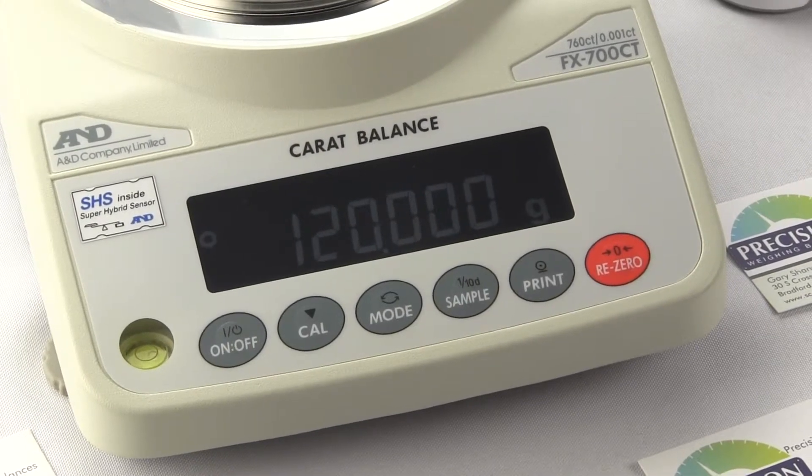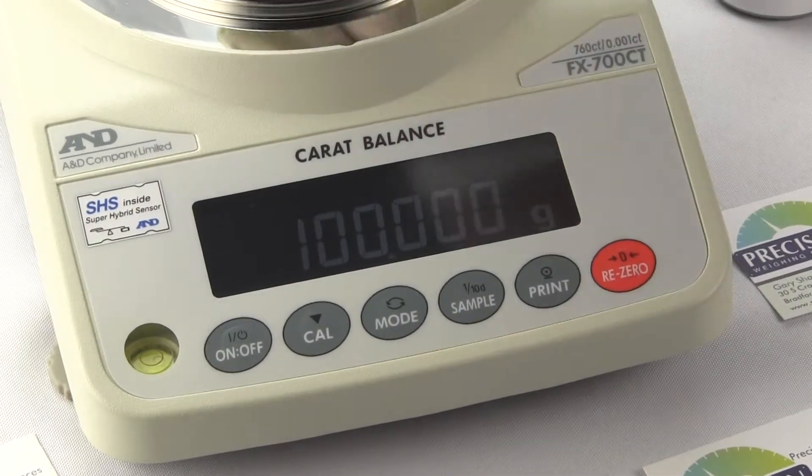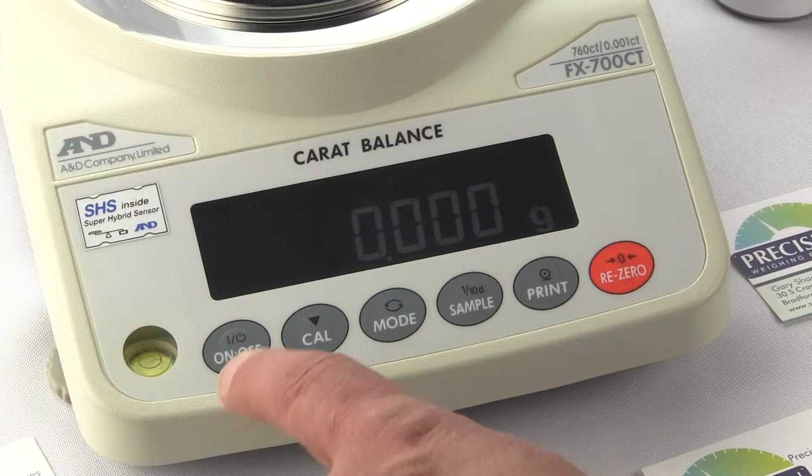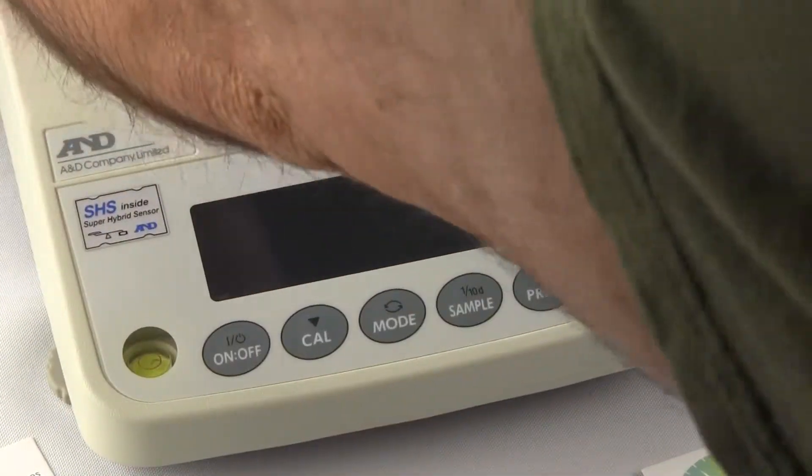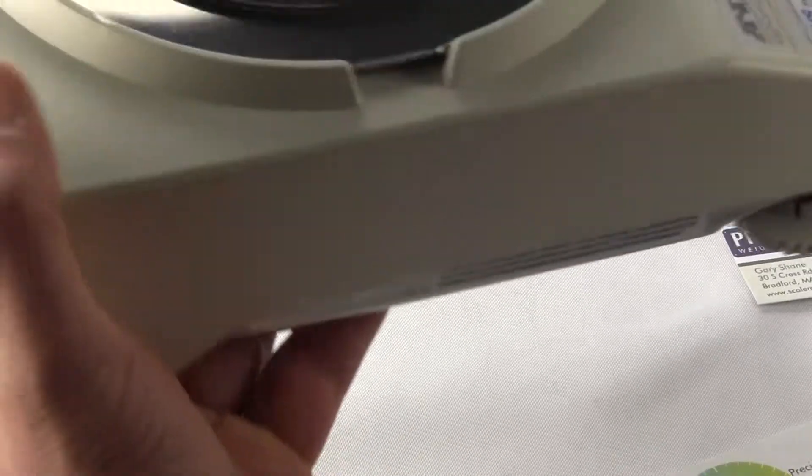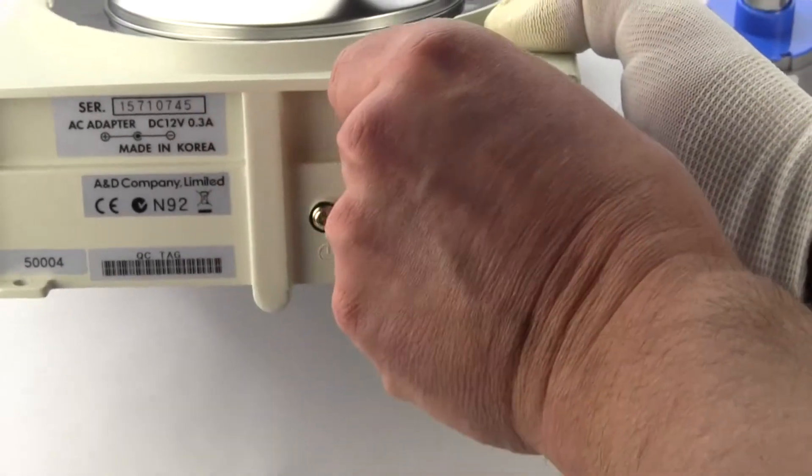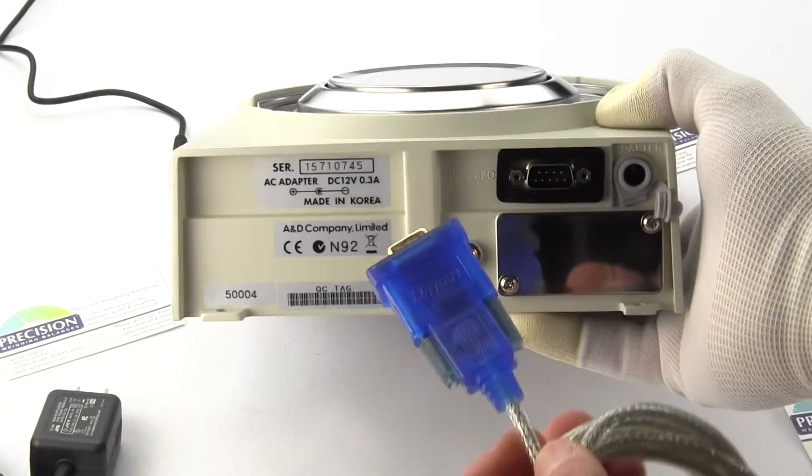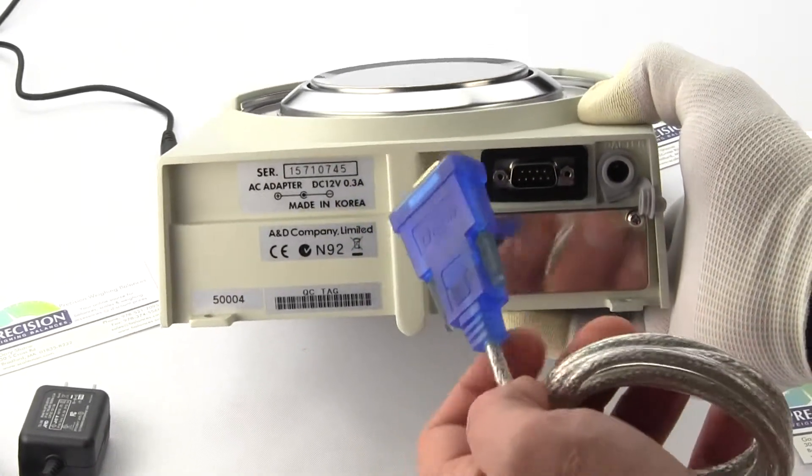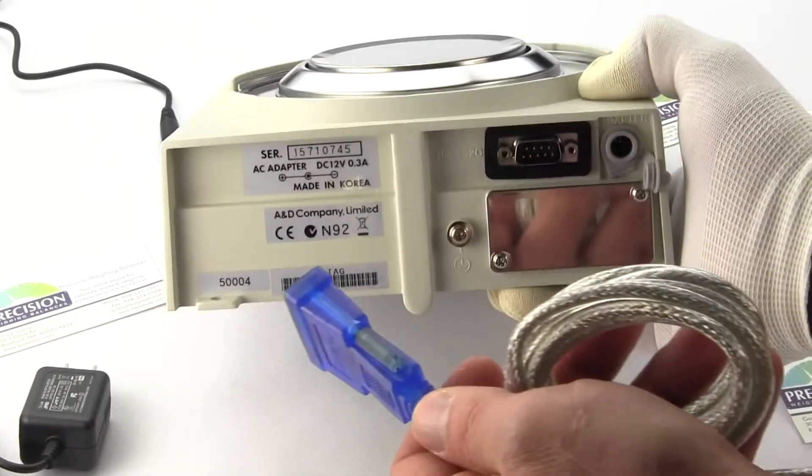One thing that you'll notice about this balance is it has also an RS-232 on the back. So let's just shut off the balance for a minute and try to show you some of the features on the rear of the balance. This balance again is operated off of AC adapter only. On the rear of the balance we have an RS-232 interface. This is a serial interface. We do offer an optional RS-232 to USB so this would just plug right in. You would need to load a driver but then you have a USB interface.